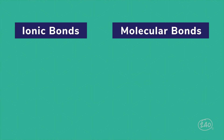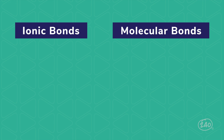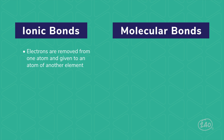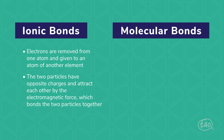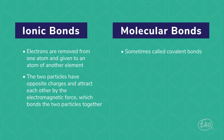Let's take it a step further with atomic bonds, looking at the differences between ionic bonds and molecular bonds. In an ionic bond, electrons are removed from one atom and given to an atom of another element. The two particles have opposite charges and attract each other by the electromagnetic force, which bonds the two particles together. Molecular bonds are sometimes called covalent bonds — electrons are shared between atoms.